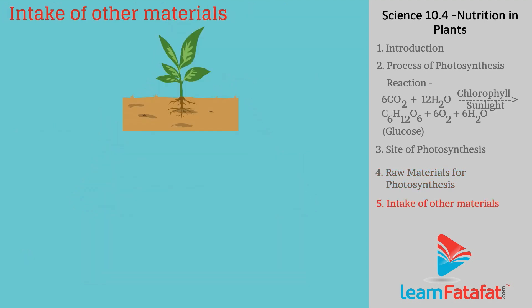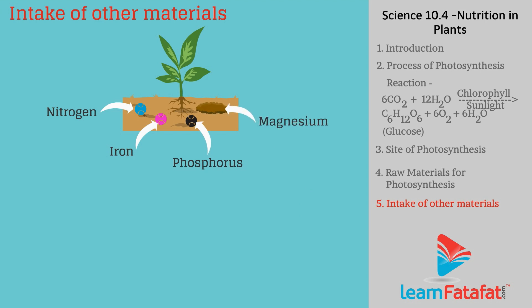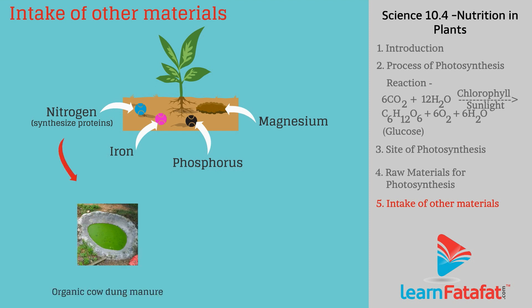Intake of other materials: Along with carbon dioxide and water, plants also need bodybuilding and regulating nutrients such as nitrogen, iron, phosphorus, magnesium, etc. These are obtained from the soil. Nitrogen, which is useful to synthesize proteins, is taken up in organic or inorganic form.